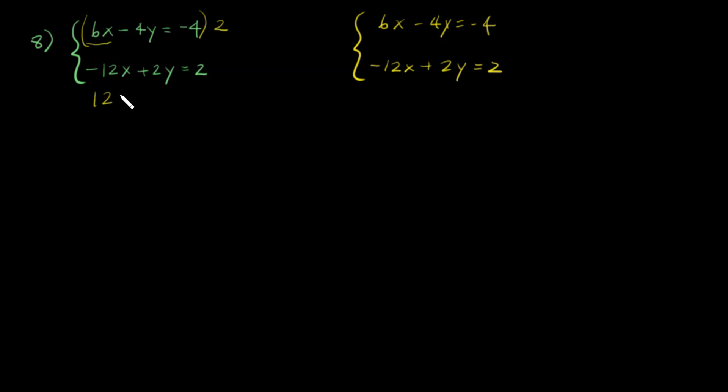And so we end up with 12x - 8y = -8. When we do that, you have the x's becoming zero, and then -6y = -6. Divide both sides by -6, so y = 1.